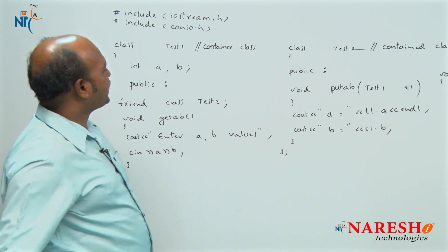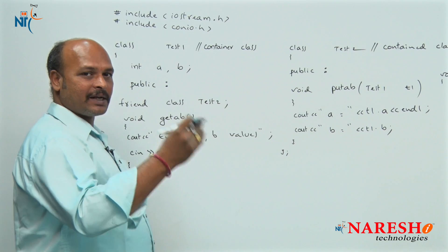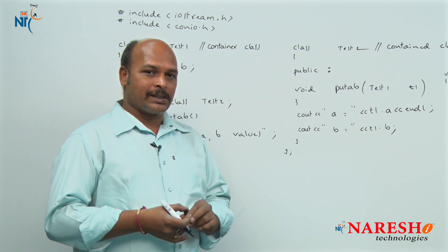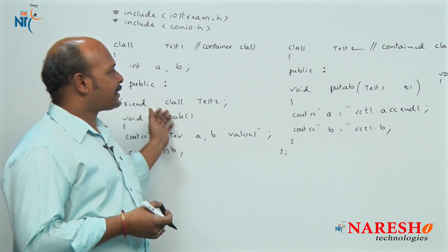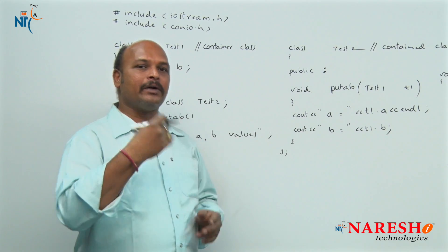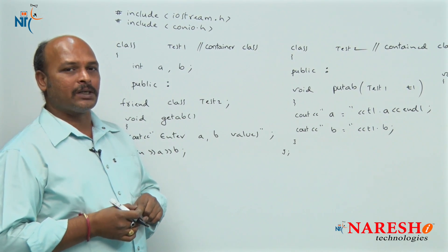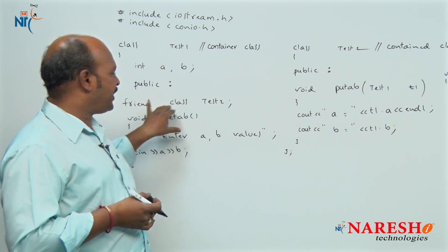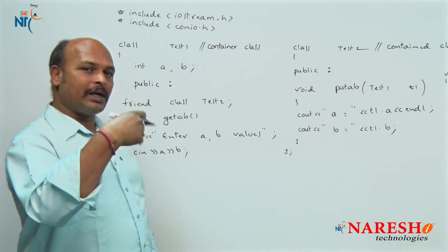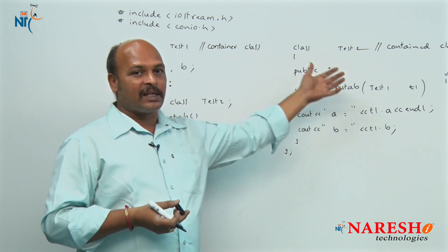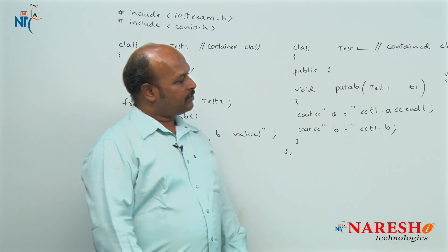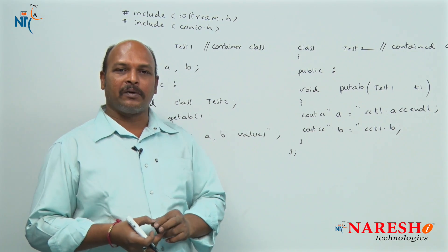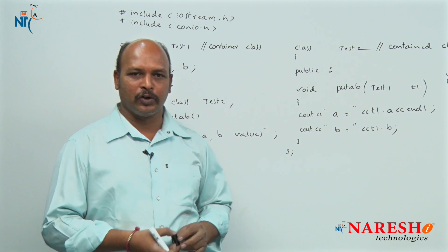That is how to introduce one class as a friend to another class — one way of accessing class members from another class. We discussed two ways: defining a friend class, and declaring the object of one class directly in another class. Thank you for watching.